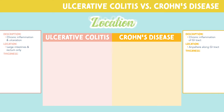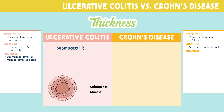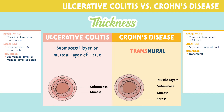Now let's look at thickness, or how deeply the condition affects the organs. In ulcerative colitis, inflammation and ulcers will affect the submucosal layer or mucosal layer of the tissue. While in Crohn's disease, inflammation is transmural, which means across the entire wall of the organ. Breaking apart the word: trans means across, and mural means the wall.